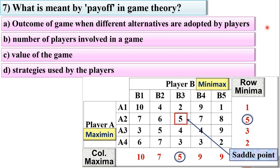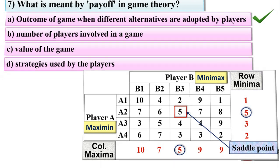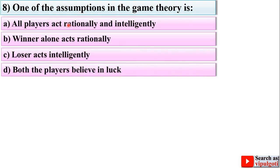Next question: one of the assumptions in game theory is — options are as follows. Looking at all the options, we can understand that players must act rationally and intelligently for a game to be possible between the two players. So A is the right answer.